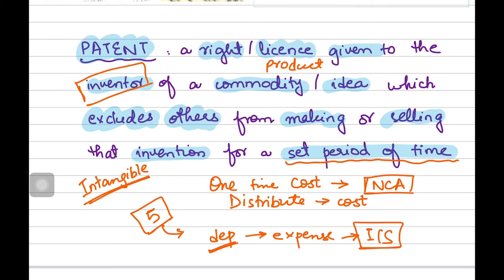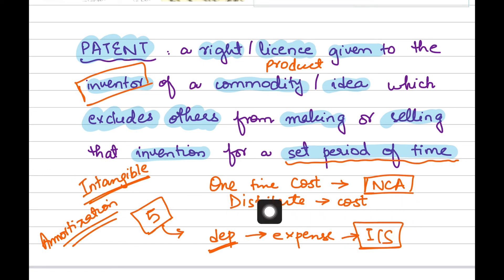So what comes under time? Your contracts, copyrights, and patents that the business purchases if it wants to keep an idea to its business only. The only difference is that the distribution of cost — which is called depreciation for tangible non-current assets — since this is an intangible non-current asset, it would be called amortization. But everything else remains the same: it has a useful life, its cost will be distributed, and the amortization or depreciation will be recorded as an expense in the income statement.